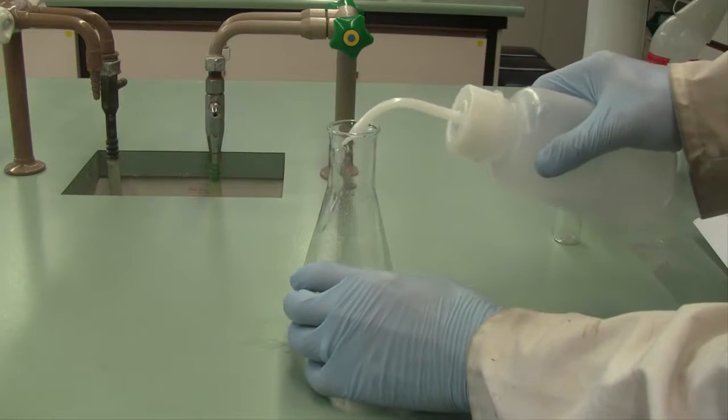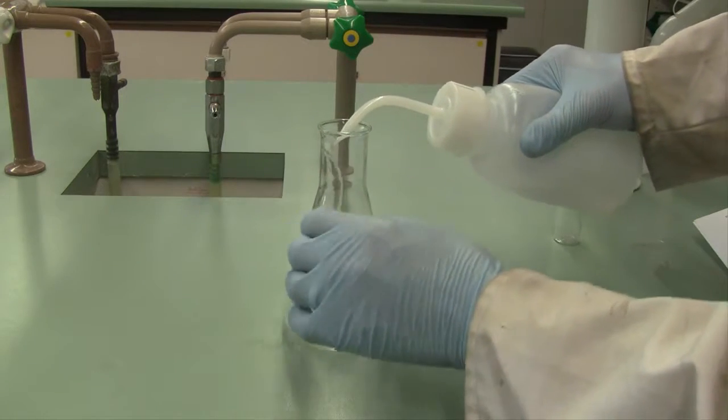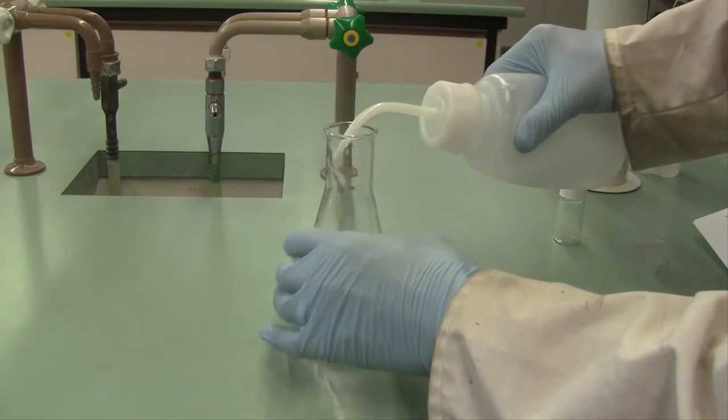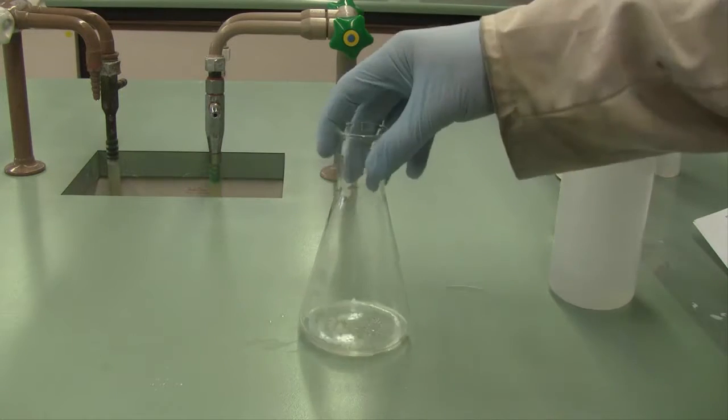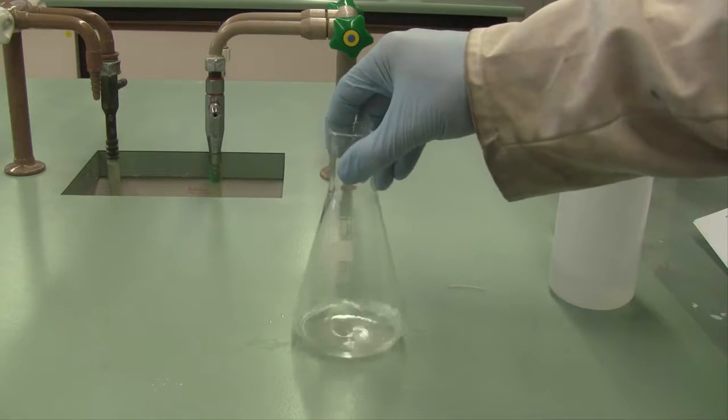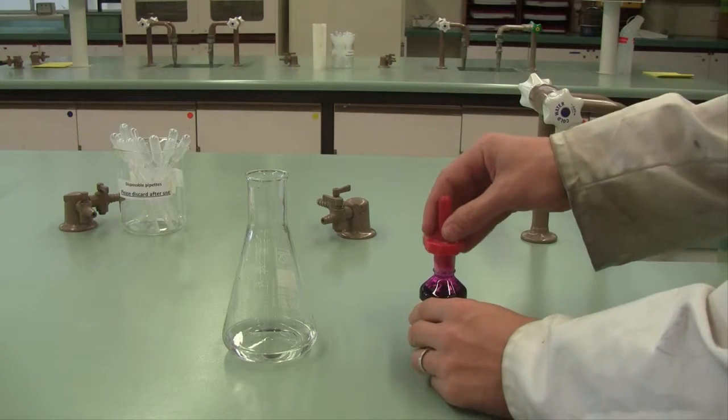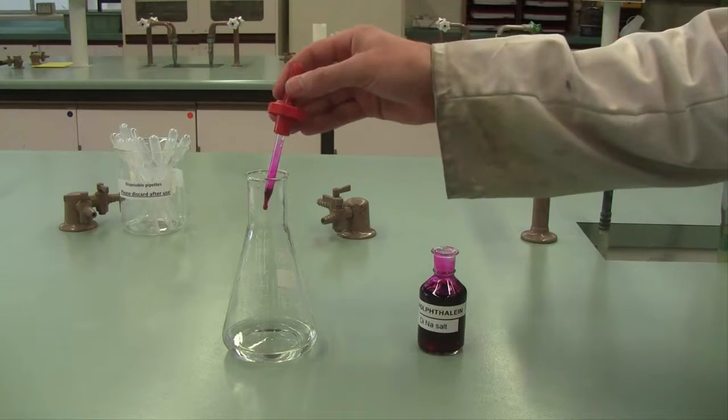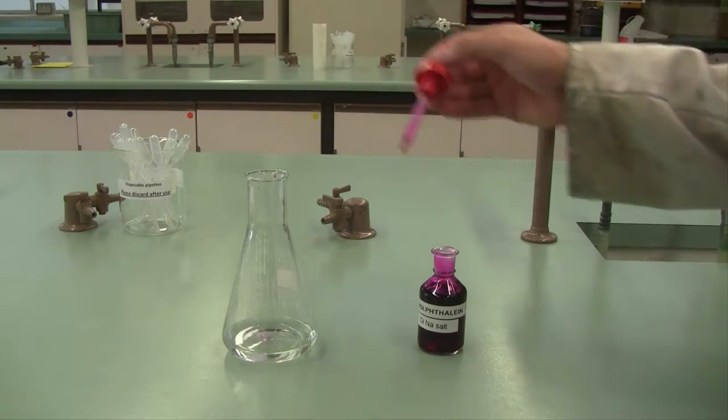Back out in the lab, use your wash bottle to wash down the walls of the titration flask. Make sure all of the solid has been washed into the water, and then mix thoroughly until all of the solid is dissolved and you have a clear colorless solution. Add two or three drops of phenolphthalein indicator to the solution.